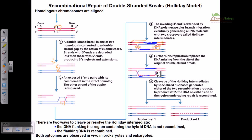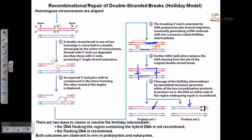Then we need to resolve the structure to get the desired product. The resolution can be done in two different ways: we can resolve both junctions either horizontally or vertically, or resolve one vertically and one horizontally, leading to four different types of variations. One type leads to the generation of a recombinant type, and another leads to a non-recombinant type. Here we find a non-recombinant type, while this is the recombinant type because both DNA strands are shuffled between two different DNA molecules.